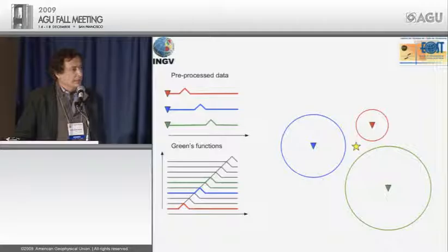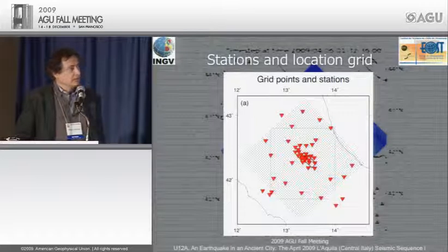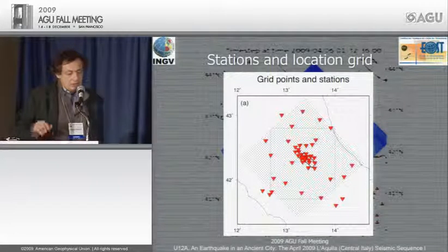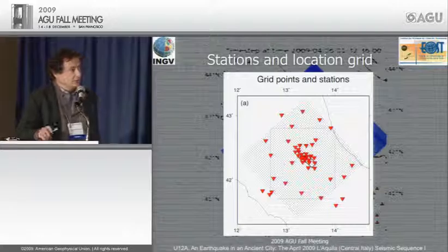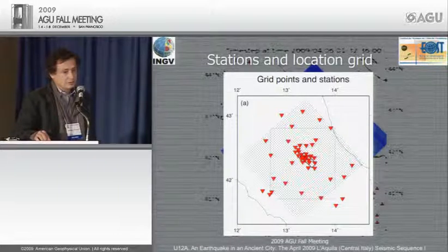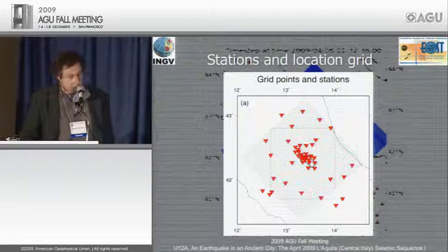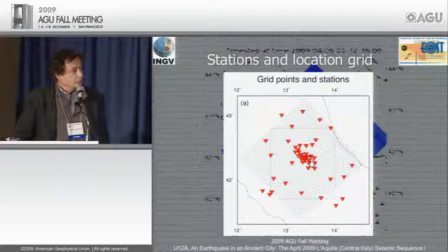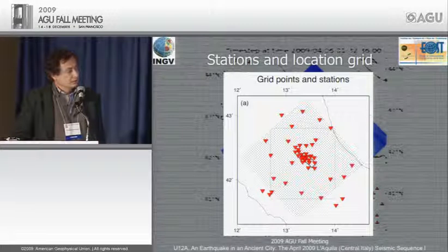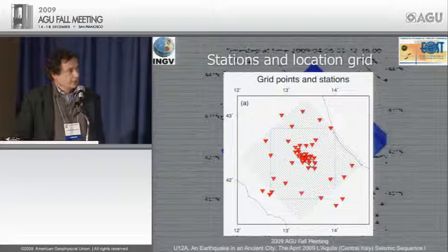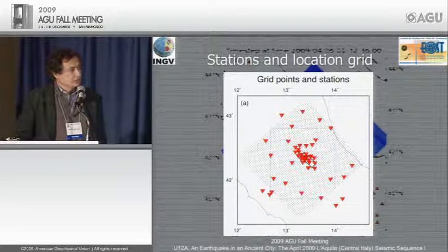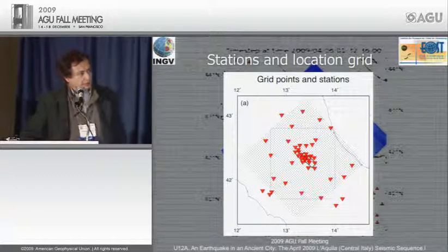A nice feature of the method is that you don't need any picking — it just goes on and analyzes the data. The stations are shown with grid spacing of three kilometers. Permanent stations are further from the main shock area, while local stations are all nearby.